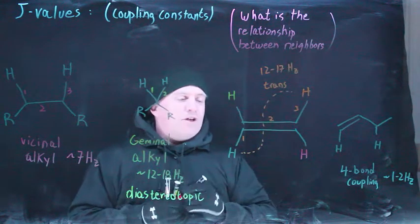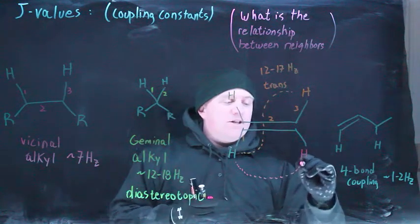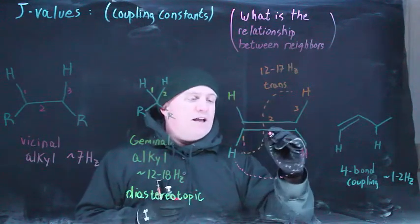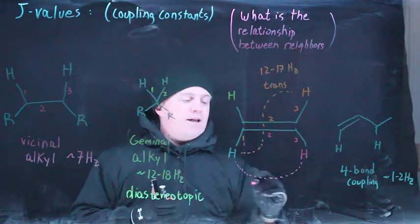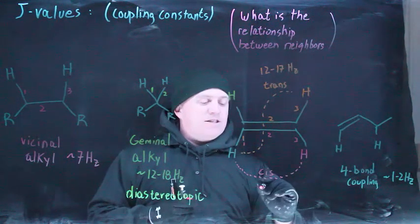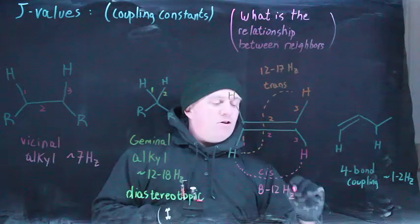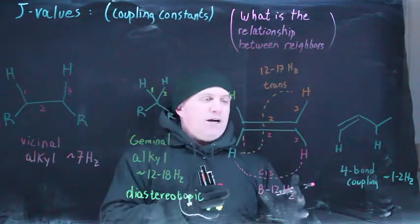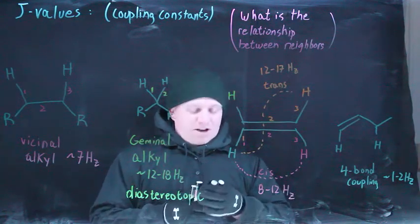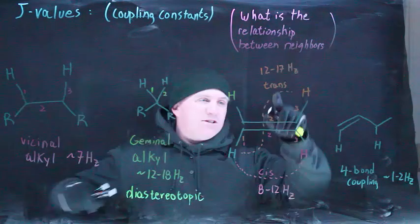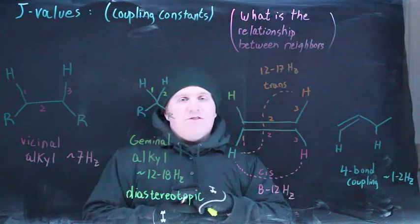If instead what we are looking at is a cis relationship between the hydrogen in question and its neighbor, once again you have a three bond relationship, but now they are locked on the same side of this double bond. And when you have that cis relationship, then this tends to be more in the range of 8 to 12 hertz. So again, a relatively large value compared to 7, but substantially smaller than trans. You can actually tell a trans coupling from a cis coupling because the J values tend to be different. In general, the smaller the J value, the more likely to be cis, and the larger the J value, the more likely to be trans.